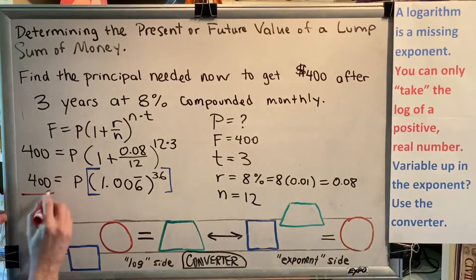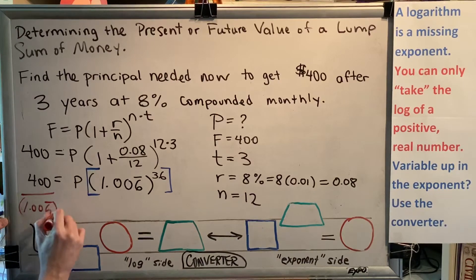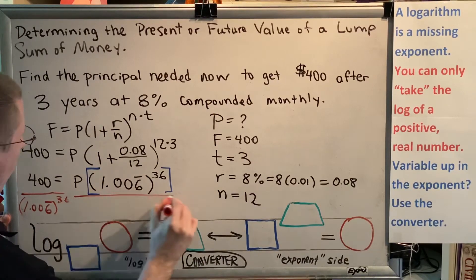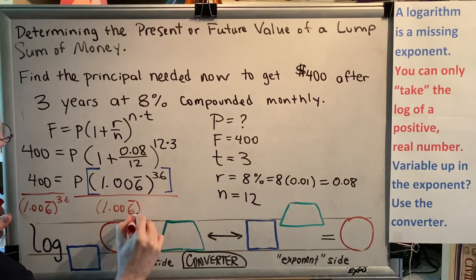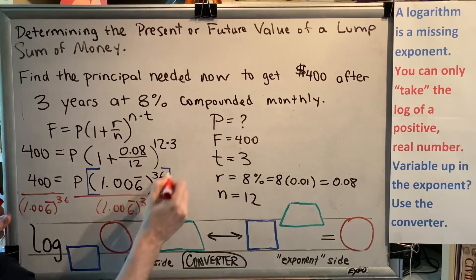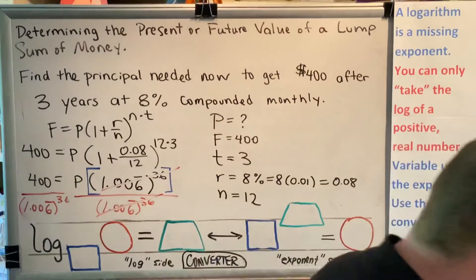And so if I divide by that exponential value on both sides, that will tell me what P equals. So on the left, I'm going to divide by 1.006 bar raised to the 36th power. And on the right, I will also divide by 1.006 bar raised to the 36th power. The exponentials will cancel, leaving me what P is exactly equal to.